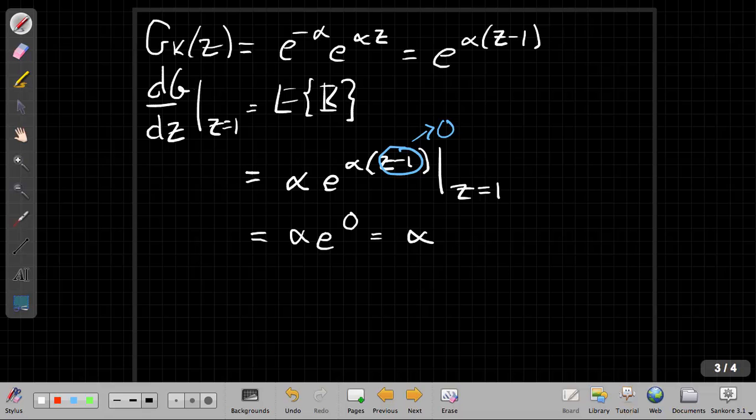So the first moment of a Poisson distribution is in fact the parameter of the Poisson distribution. In fact, that's the only free parameter. If I tell you the mean of a Poisson distribution, I've completely determined the Poisson as it's given in this form.